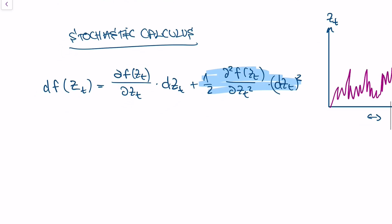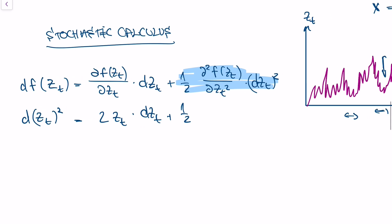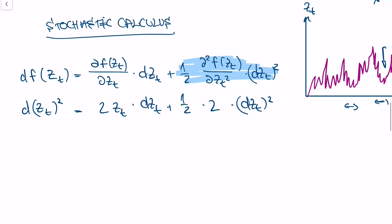Let's do another example. Let's understand how the function zt squared — so Brownian motion squared — changes if we change zt a bit. The first derivative gives 2zt times the change in the Brownian motion, and one-half times the second derivative, which is 2, times the change in the Brownian motion squared. So we get 2zt times dzt plus dzt squared.